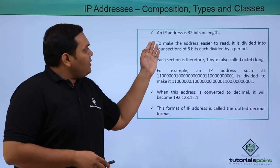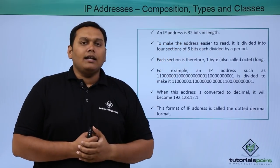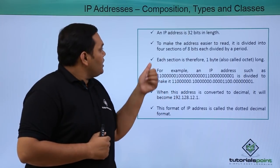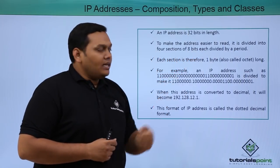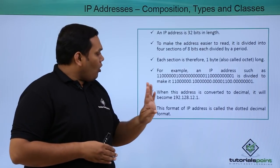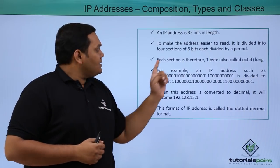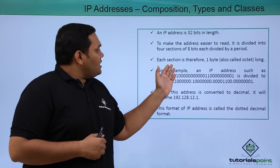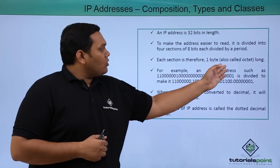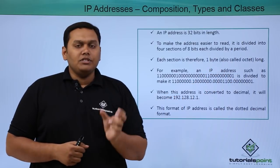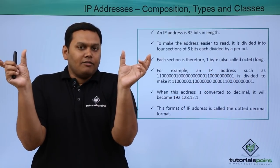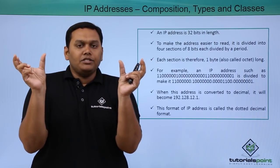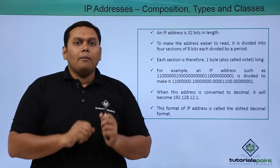Coming here, the IP address is 32 bits in length, which contains network component as well as host component. To make the address easier to read, it is divided into 4 octets, each octet having 8 bits. Each section is therefore 1 byte, also called an octet long. That means it is divided into 4 components or 4 parts, each part of 8 bits, also called 1 byte.